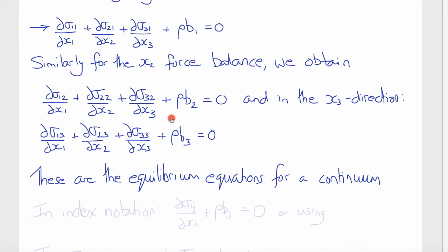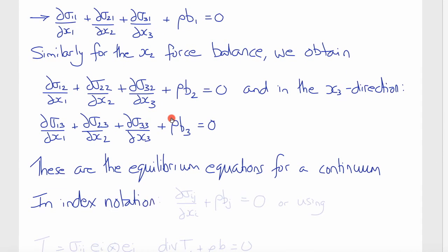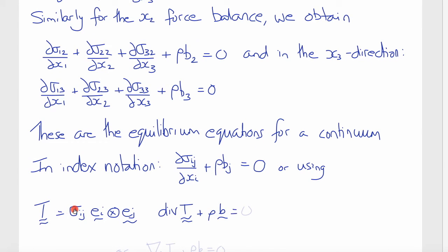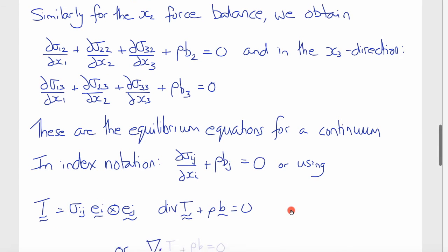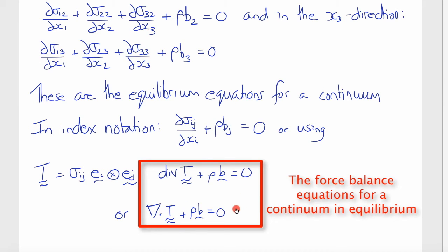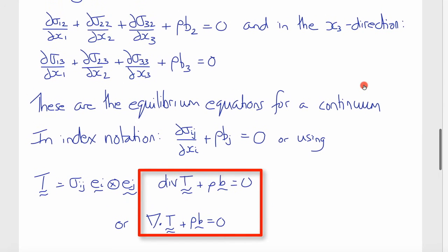we can write these equilibrium equations for a continuum more compactly using index notation as ∂σij/∂xi. And notice again, it's the first index that we're taking derivatives with respect to and summing. So the i is repeated, and the free index is j. So this is one, two, three, plus ρbj is equal to zero. So this is three equations for j equals one, two, and three. Or in direct notation, and I'll switch from σ to T here, we would write that as the divergence of T plus ρ times b equals zero, or div T plus ρb equals zero.